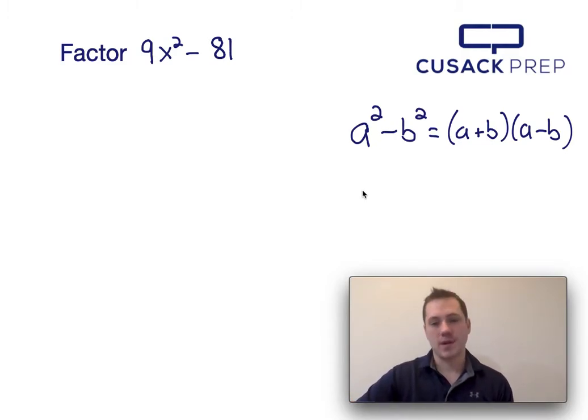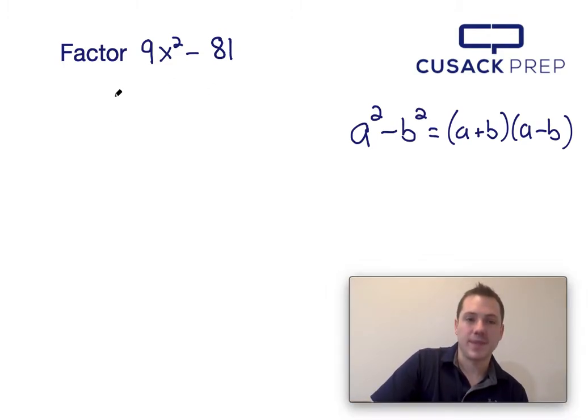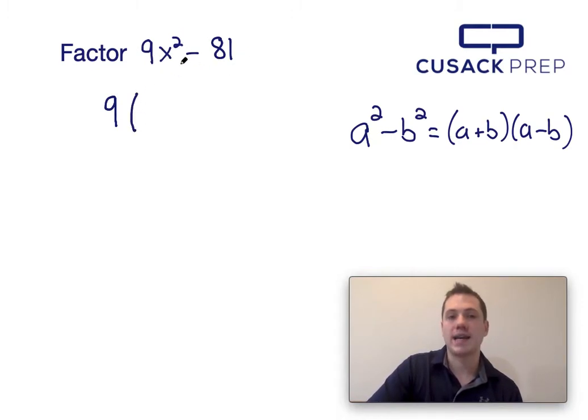When factoring 9x squared minus 81, I first see that I can factor a 9 out of both terms as the greatest common factor. To take out the greatest common factor, I bring the 9 out to the front and then divide the remaining two terms by 9. 9x squared divided by 9 leaves me with just x squared, and 81 divided by 9 leaves me with just 9.